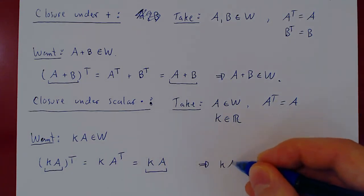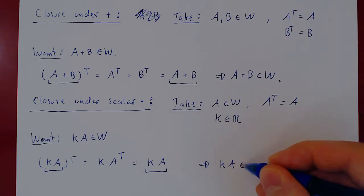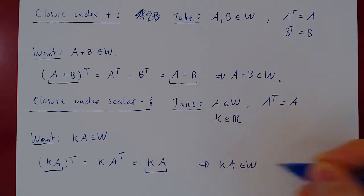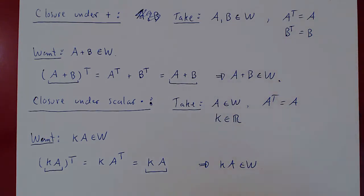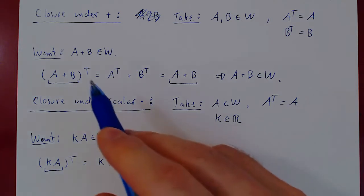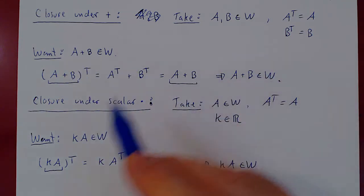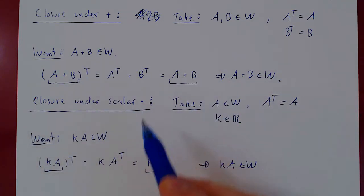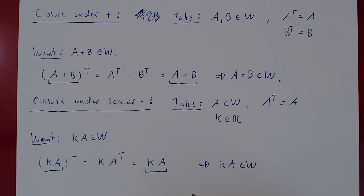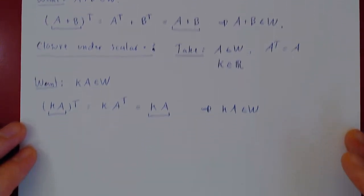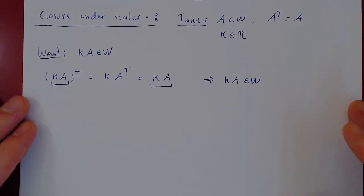We have closure under addition and closure under scalar multiplication. Therefore, by the subspace theorem, W is a vector space.